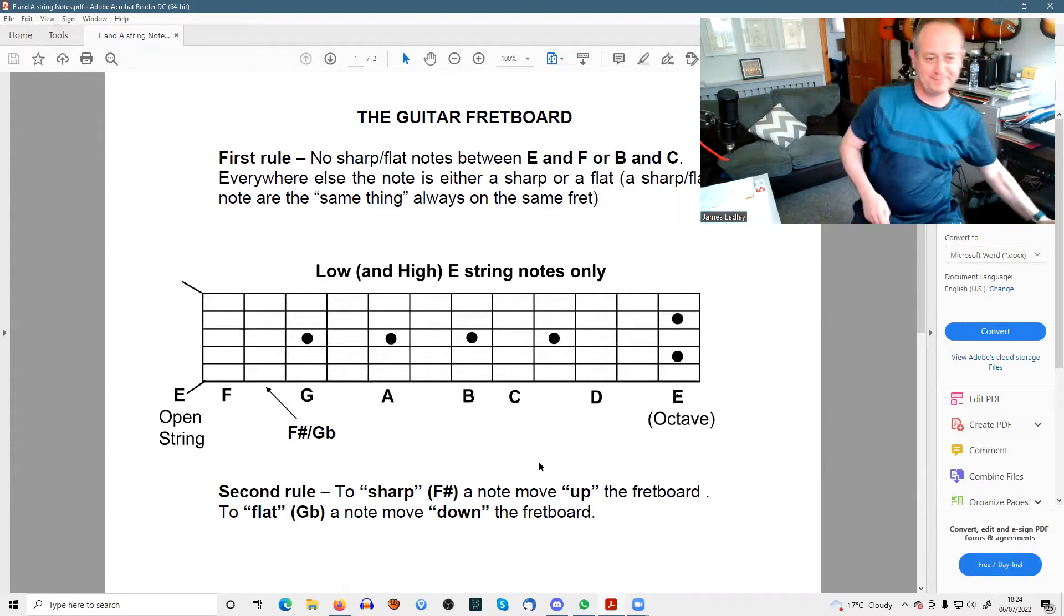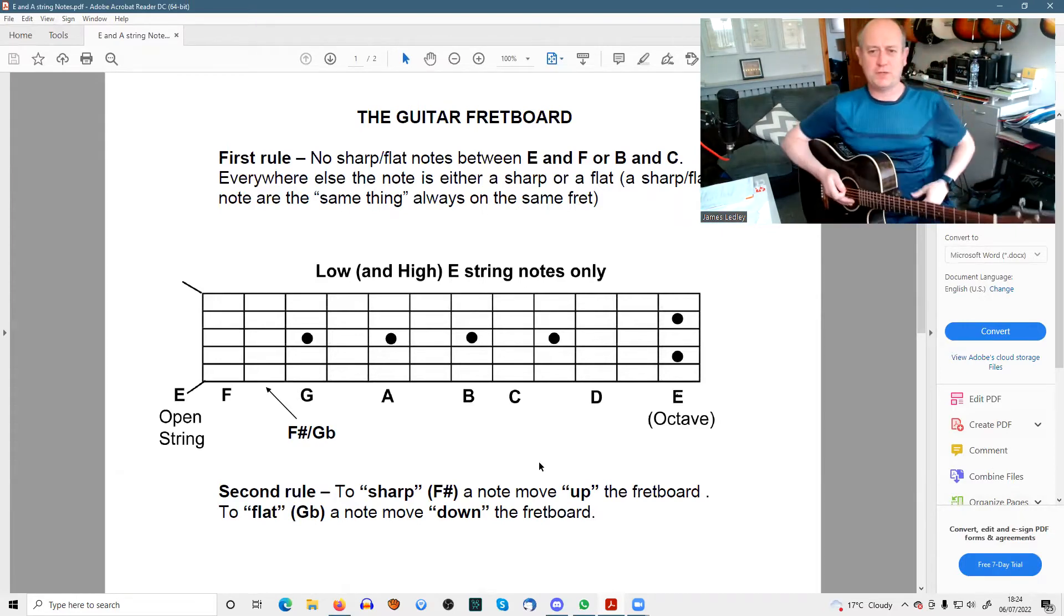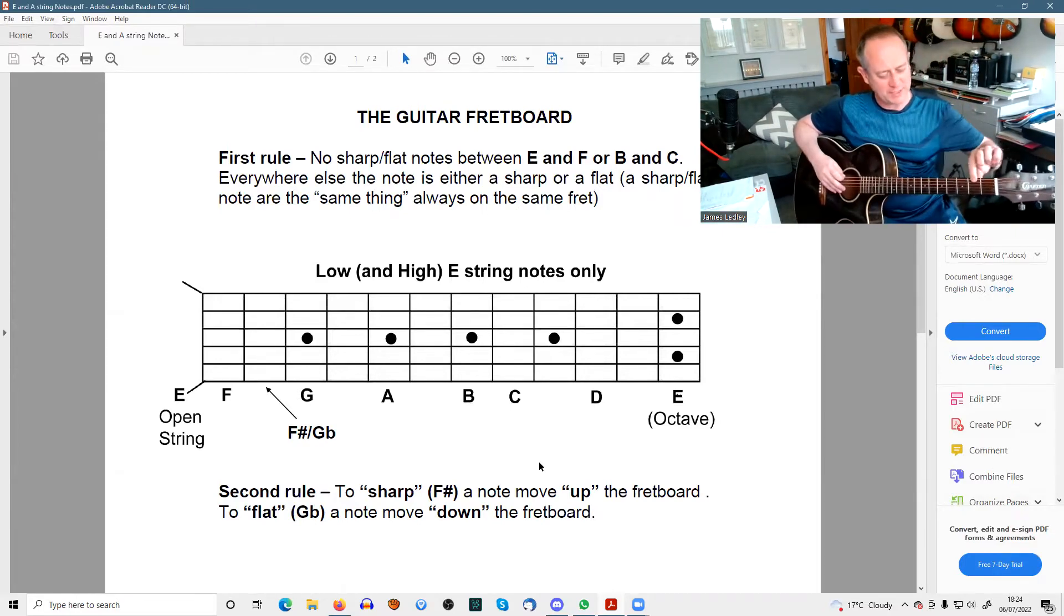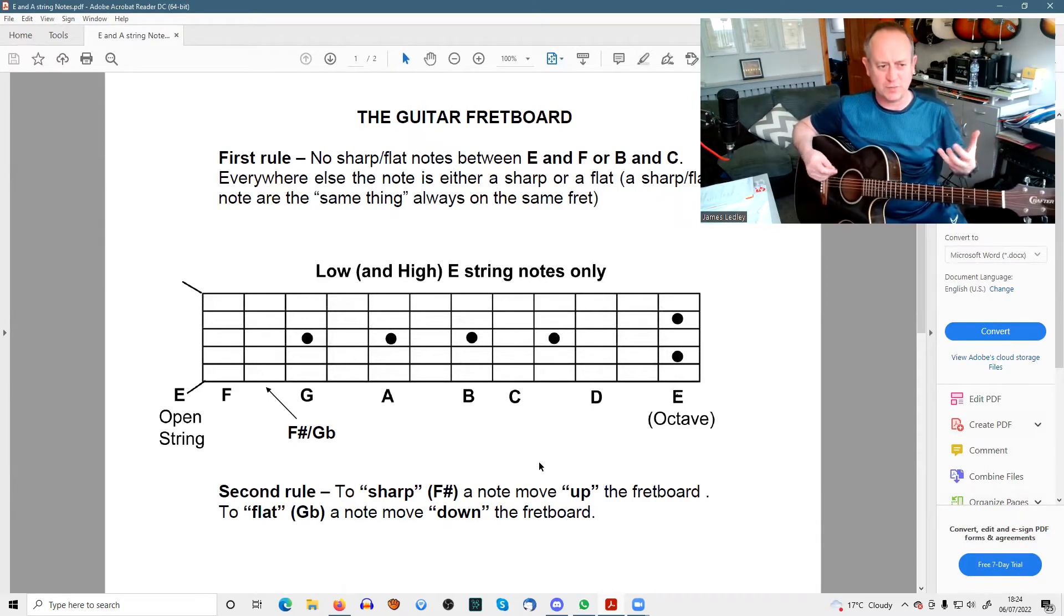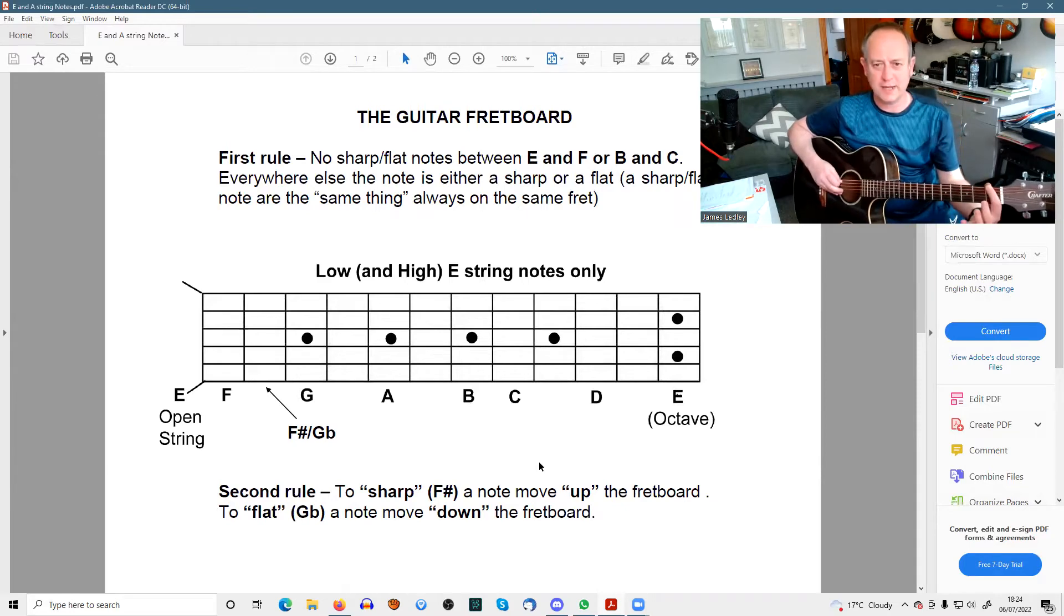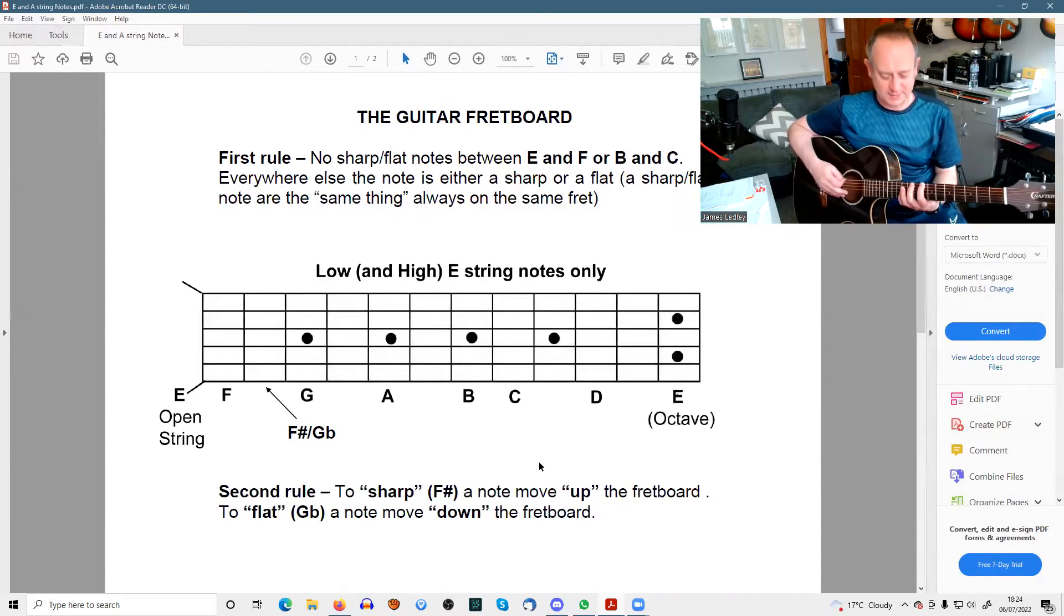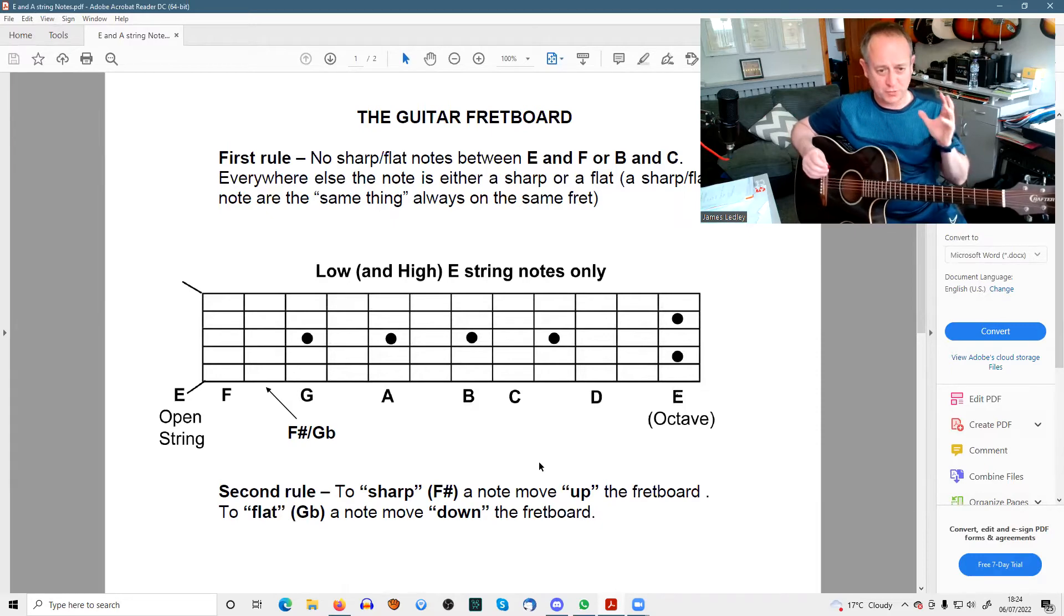So to show you what I mean, instead of grabbing a fretboard document that has all the sharps and flats on it, forget about those at the start and try to get what I call the main notes. The E, F, G, A, B, C, D, and E is the octave on the 12th fret. You'll notice something.